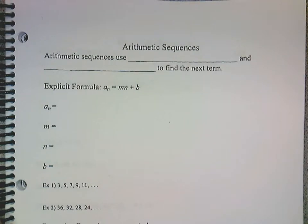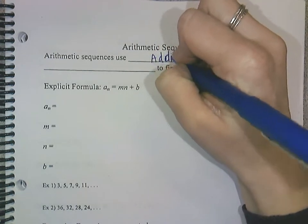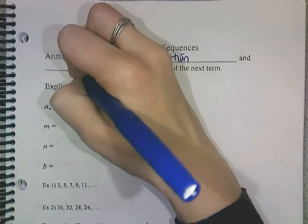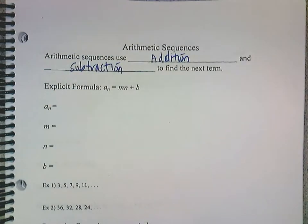Okay, so today we're going to talk about arithmetic sequences. Arithmetic sequences use addition and subtraction to find the next term. So all of these sequences for arithmetic are going either up or down by adding or subtracting. That's it. So there's not like weird ones. They have to be subtracting or adding by the same number every time.